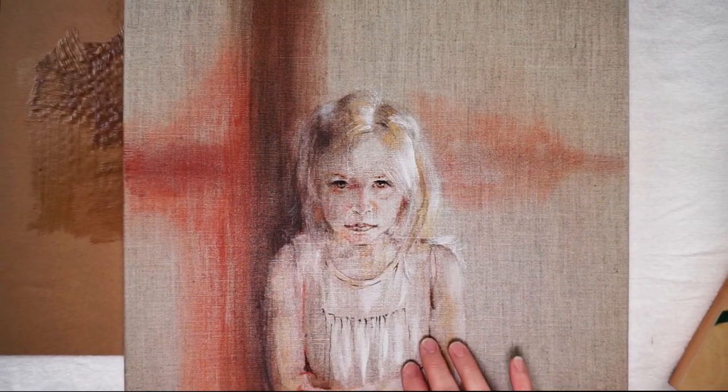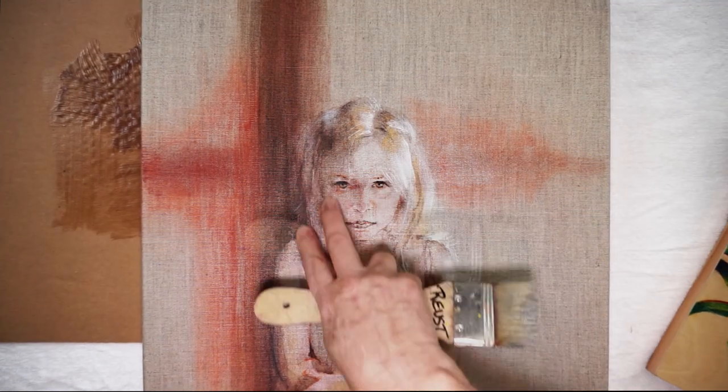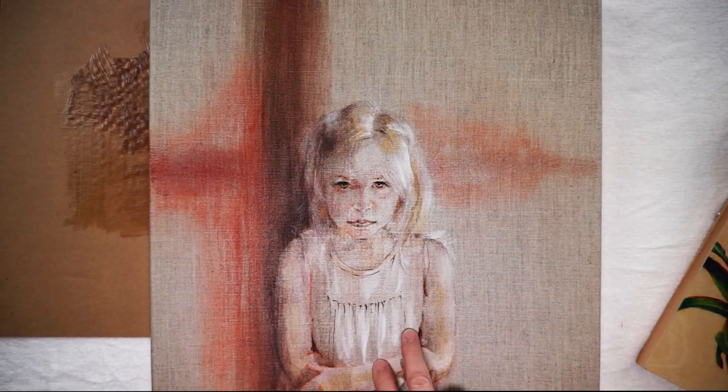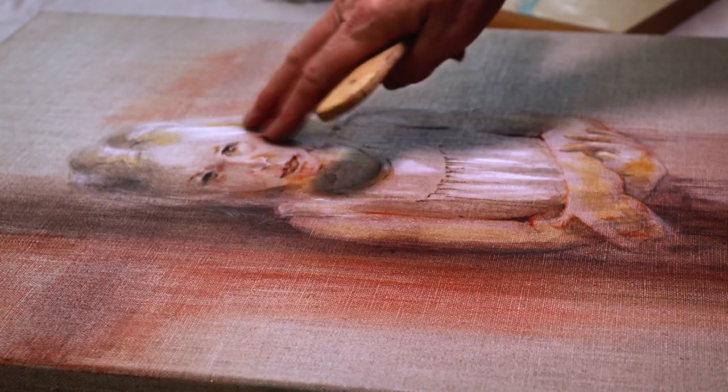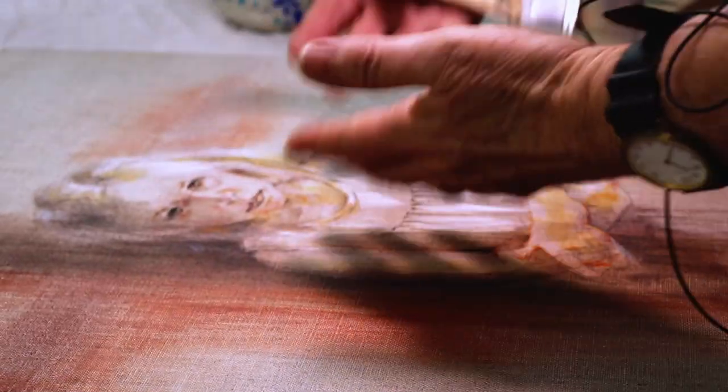So everywhere where the composition was going to be centered, I've painted binder medium. And when that's dry, I've been able to put the final layer of the acrylic on.